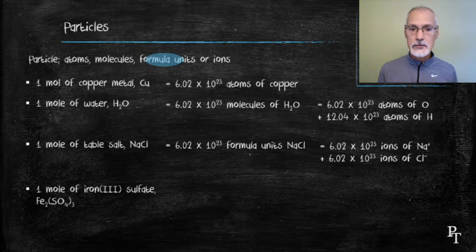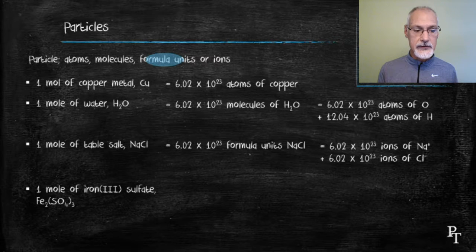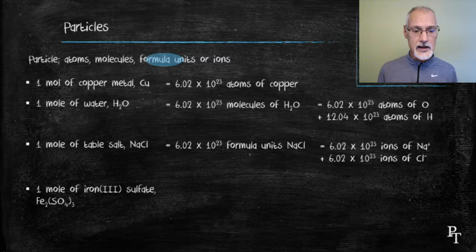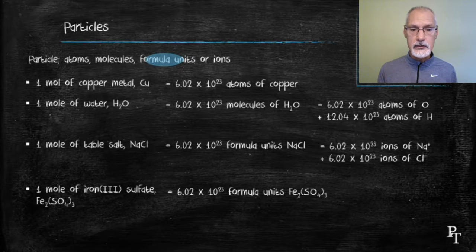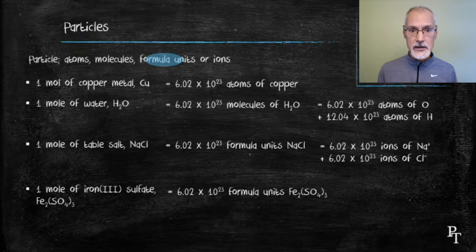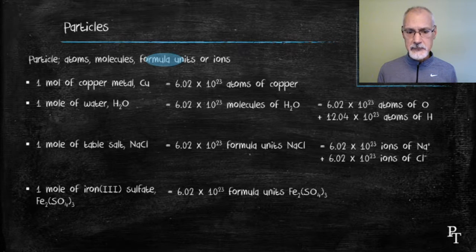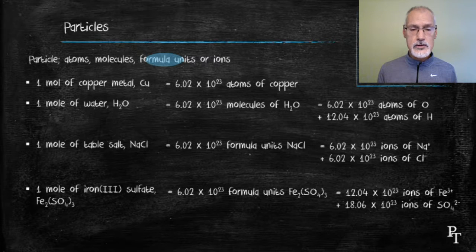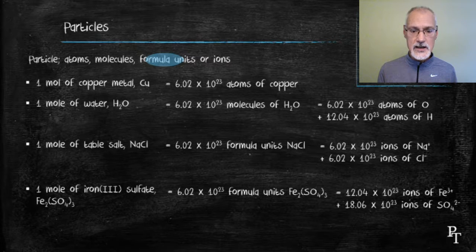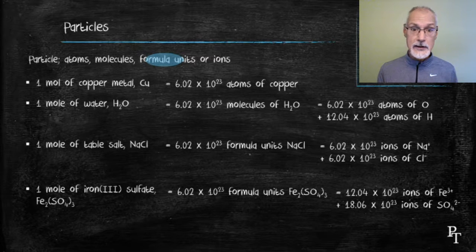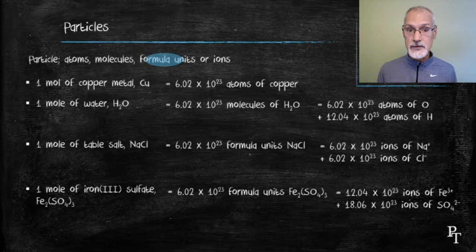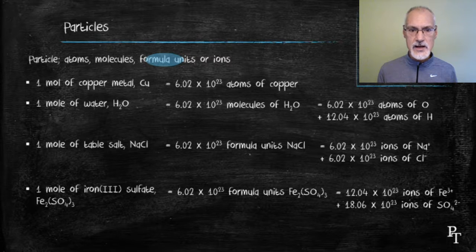In my last example, 1 mole of iron 3 sulfate, that also is an ionic material. So I would have 6.02 times 10 to the 23rd formula units of iron sulfate. Now, if I wanted to break that down further, it would consist of 2 moles of iron ions, which I obtained from the subscript of 2, and it would have 3 moles of sulfate ions. Now, I could take those sulfate ions and break them down further into atoms, but I'm going to stop at this point.